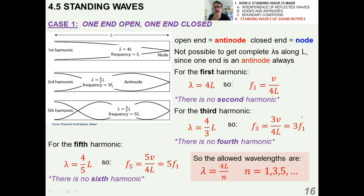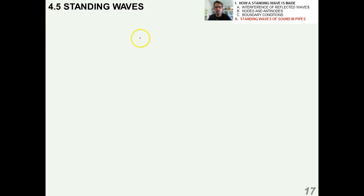Why are these odd integers? It's because of the initial boundary conditions of there being a node on one end and an antinode on the other, which comes from the physical fact that one end of the pipe is open and the other is closed. Really cool stuff.